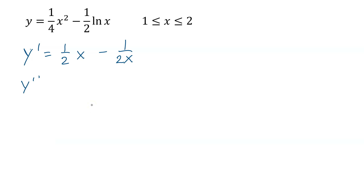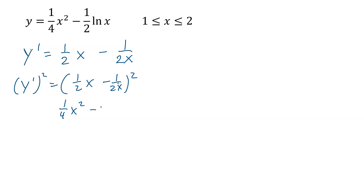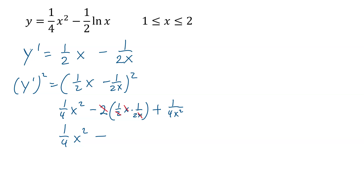Then we're going to square this. So y prime squared equals (1/2 x minus 1/(2x)) squared. We're going to multiply this whole thing out: this is 1/(4x squared) — wait, 1/4 x squared. In the middle, it's going to be this one times this one, times 2, so minus 2 because positive times negative is negative. We get 2 times 1/2 x times 1/(2x), plus the other one squared — 1/(4x squared). That 2 cancels that 2, that x cancels that x, so we end up with 1/4 x squared minus 1/2 plus 1/(4x squared).